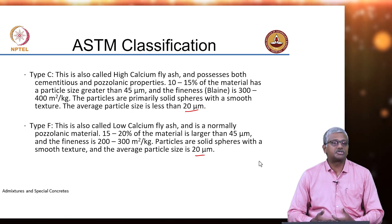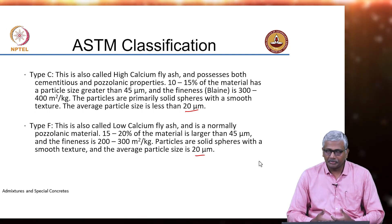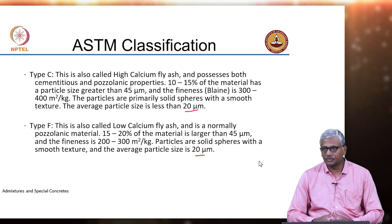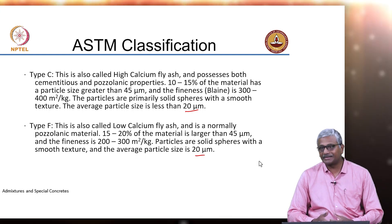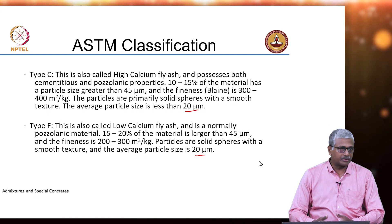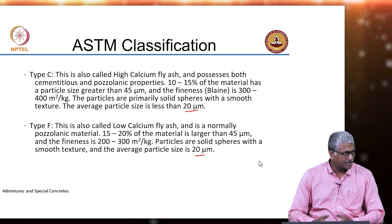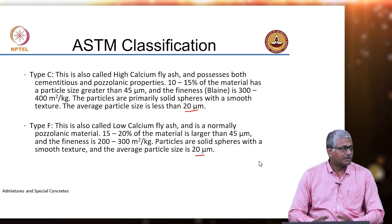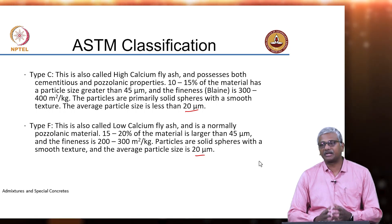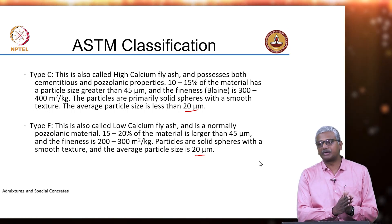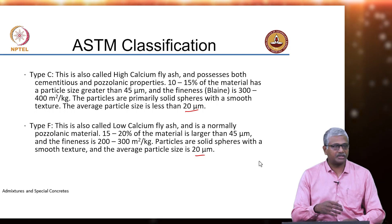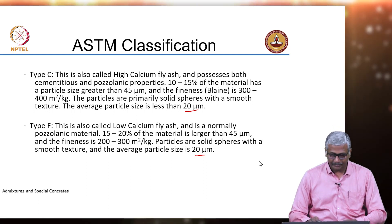Type F fly ash has essentially a pozzolanic performance, whereas type C can exhibit some cementitious nature also, in that it can undergo the reaction on its own. Even in the absence of lime, there can be some reaction because of the higher calcium oxide content. Obviously if the calcium oxide content is not high enough, you may not get that reaction — you may still need to provide sufficient quantities of lime.